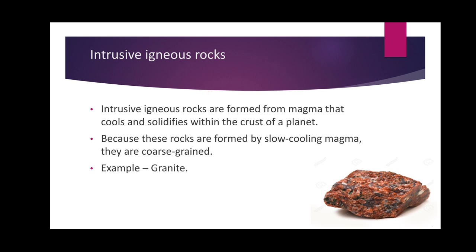Intrusive igneous rocks are formed from magma that cools and solidifies within the crust of a planet. Not all magma erupts outside — some magma gets stuck in pipes within the earth's crust and cools and solidifies there. The rate of cooling is very slow, and because of this, these rocks are coarse-grained and very rough in texture. An example is granite, which is used for construction purposes. So these are the two types of igneous rocks: extrusive igneous rocks and intrusive igneous rocks.